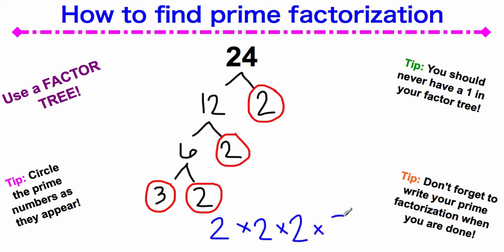If you actually do the math on this: 2 times 2 is 4, 4 times 2 is 8, and 8 times 3 equals 24. So you can see that all we did was break 24 down into its prime factors and combine those all together to make its prime factorization.